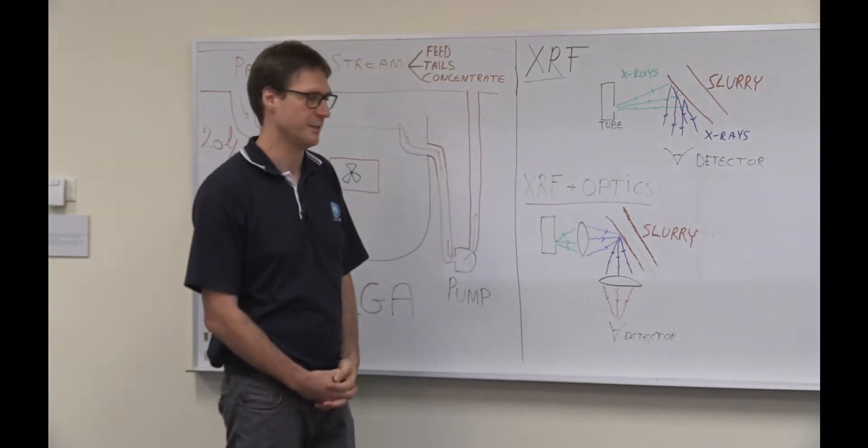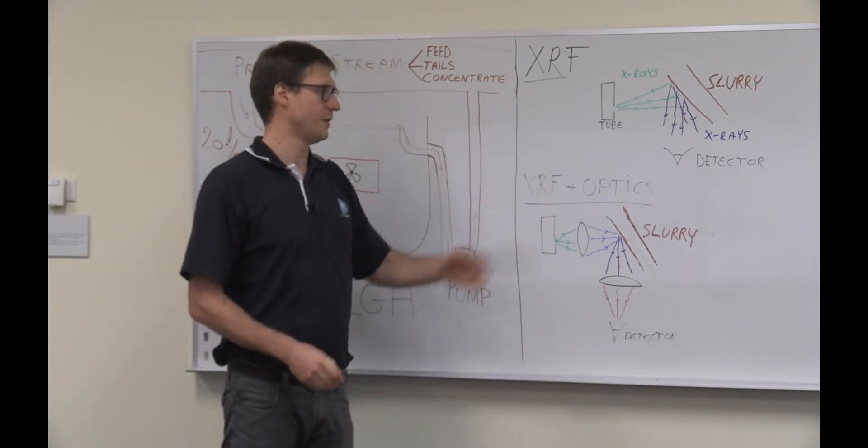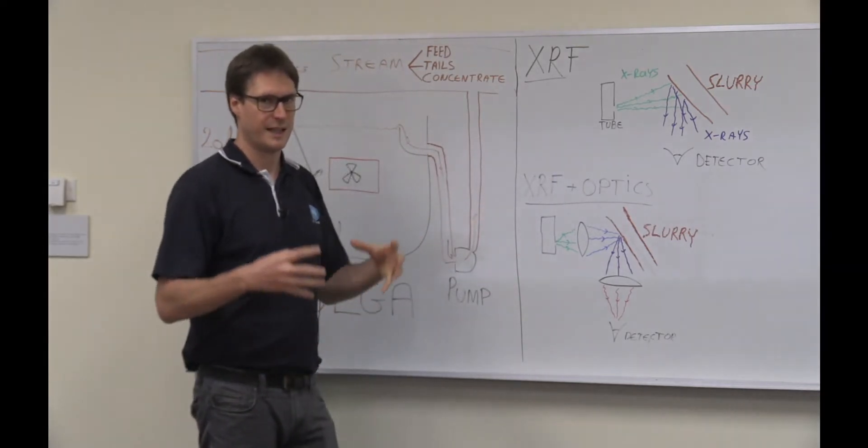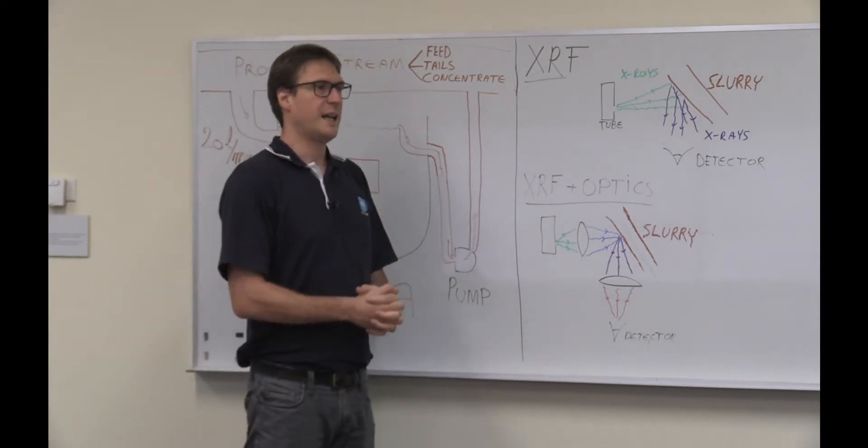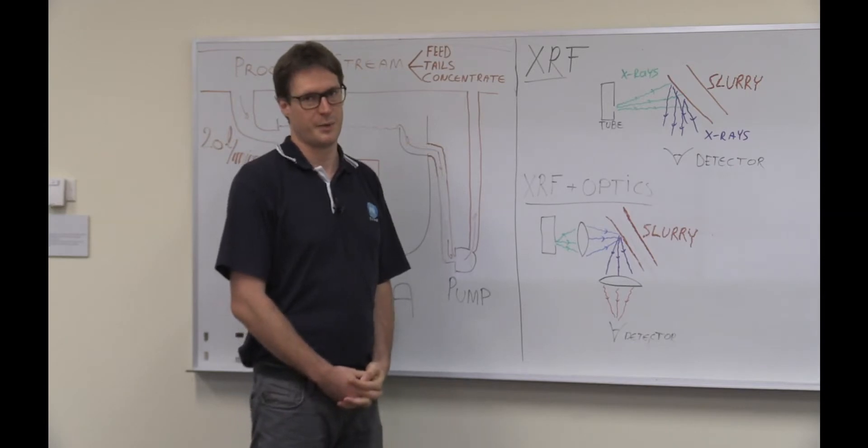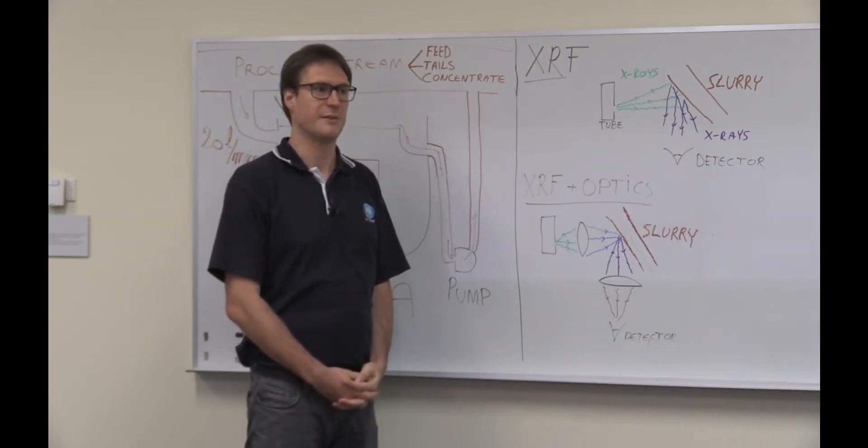So how do we push down the detection limit? Well, we do this by the usage of X-ray optics. An X-ray optic, in our case, is a crystal, and it works the same way a colored magnifying lens works for light, but then for X-rays.